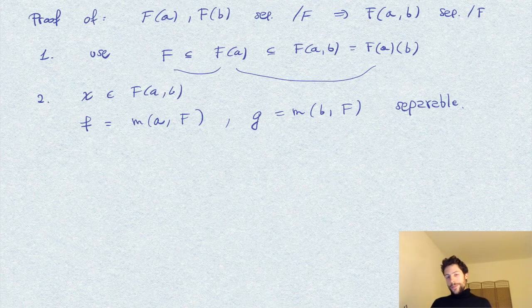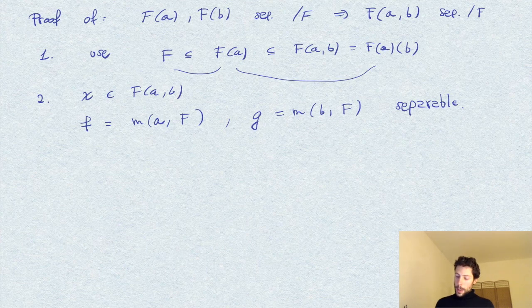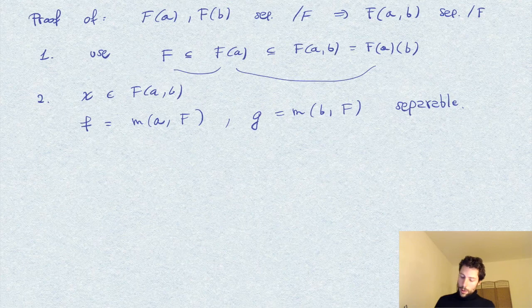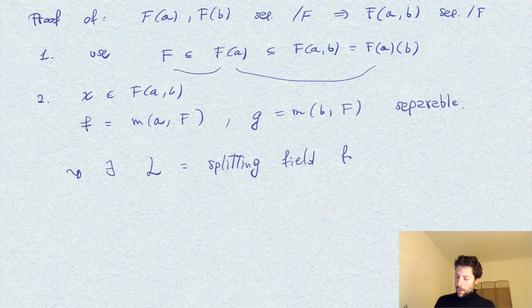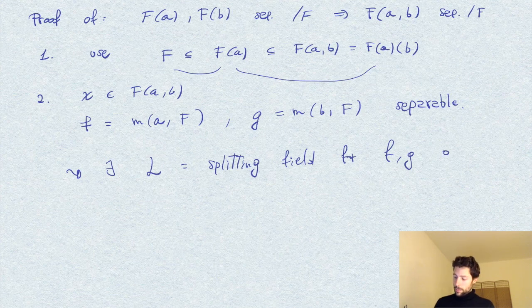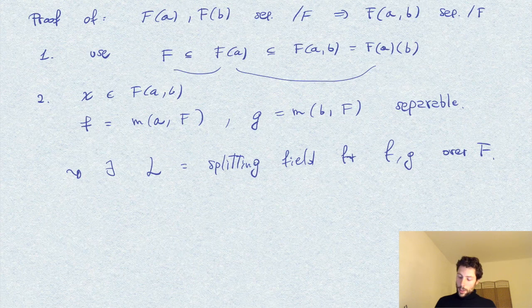So, I can consider the, so, let's consider the splitting field, we have an existence of splitting field for these two polynomials. So, I consider L splitting field for F and G as an extension of F. So, we have a splitting field for this polynomial, but these are separable, so, in particular, L over F is a separable extension.